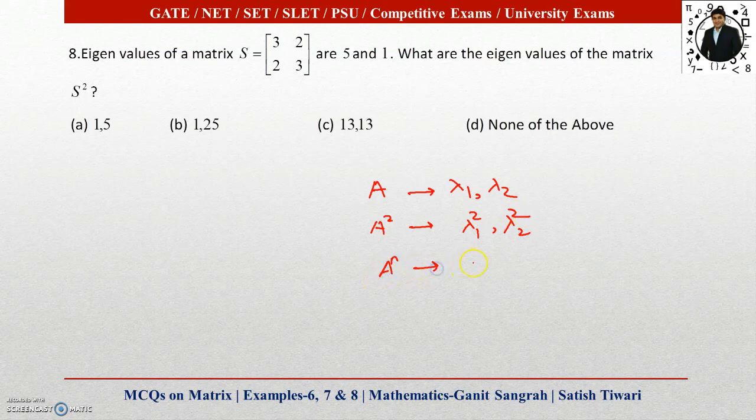In general, we can see that A to the power n will have eigenvalues lambda 1 to the power n and lambda 2 to the power n.